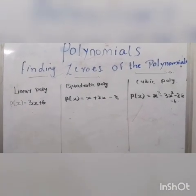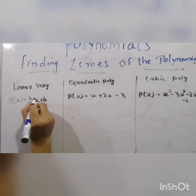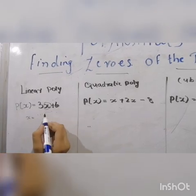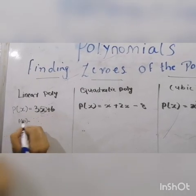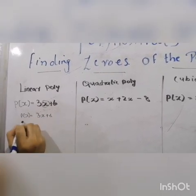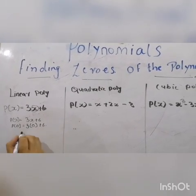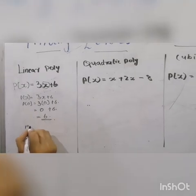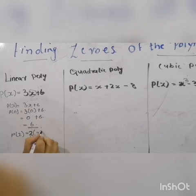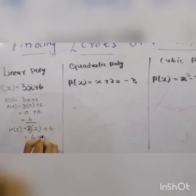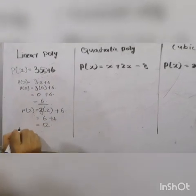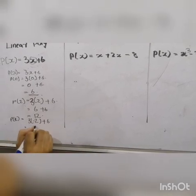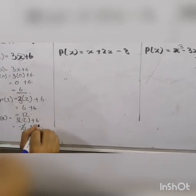Now let's take a look at the linear polynomial. Everything here seems pretty normal except for x. So let's take a look at different values of x — it can be 1, minus 1, 0, minus 2; any value we can take. Taking P(x) = 0 for 3x + 6: 3(0) + 6 = 6. Taking P(x) = 2: 3(2) + 6 = 6 + 6 = 12. Taking P(x) = minus 2: 3(−2) + 6 = −6 + 6 = 0.